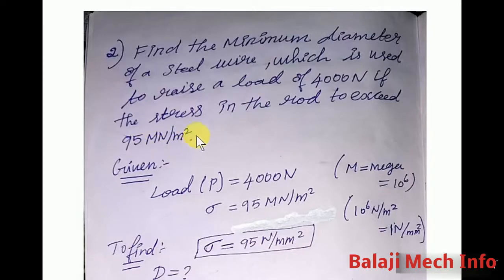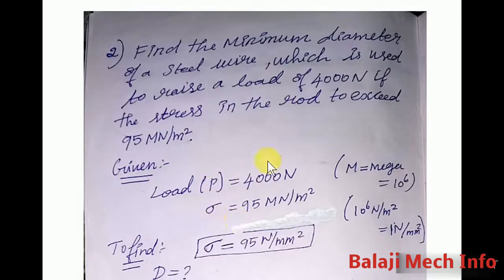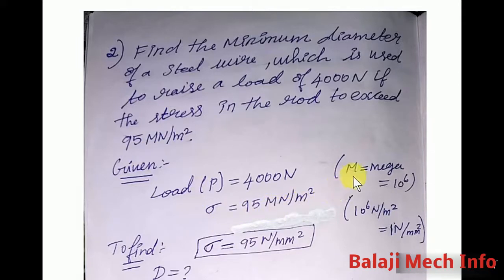We need to find the minimum diameter of the steel wire. The load is 4,000 N and the stress is 95 MN per m². We have to work with units of N per m².